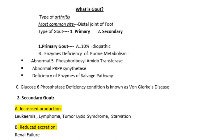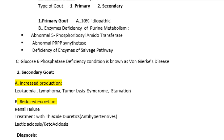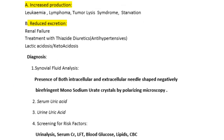Gout is the most common condition where uric acid is measured. It is a type of arthritis that causes swelling of different joints, most commonly the distal phalanx of the great toe. Diagnosis is most commonly made from synovial fluid, where intracellular or extracellular needle-shaped, negatively birefringent monosodium urate crystals are detected using a polarizing microscope.